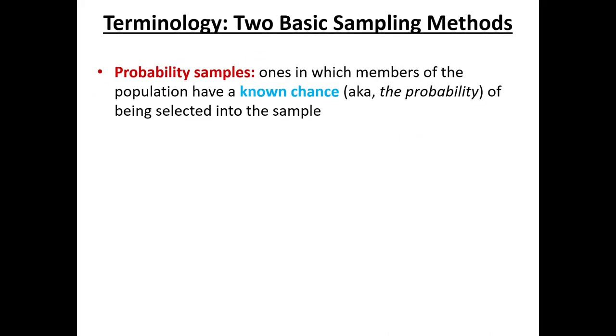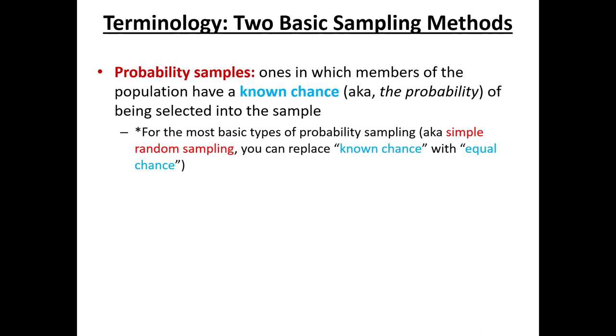In probability sampling, it's when the members of the population have a known chance or a calculable chance of being selected into our sample. For the most basic type, simple random sampling, which we'll discuss shortly, you can replace the phrase 'known chance' with 'equal chance.' Every person has an equal chance of being selected.